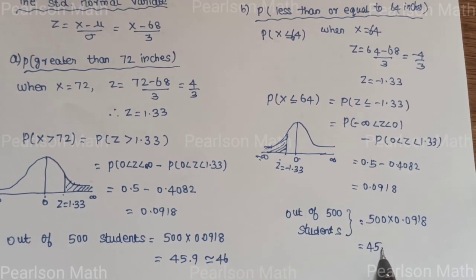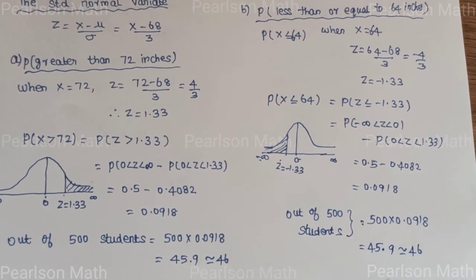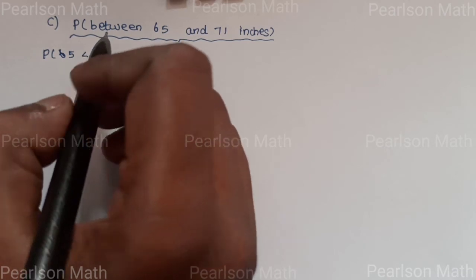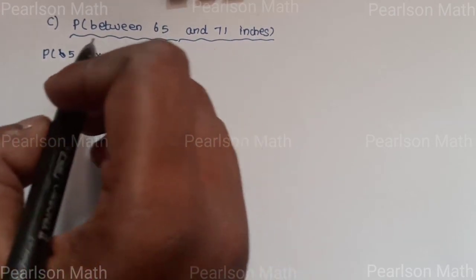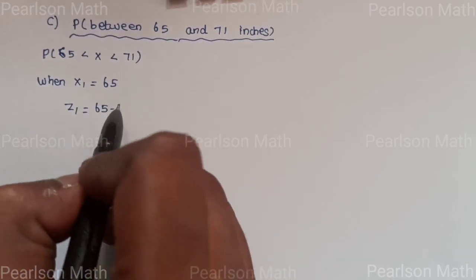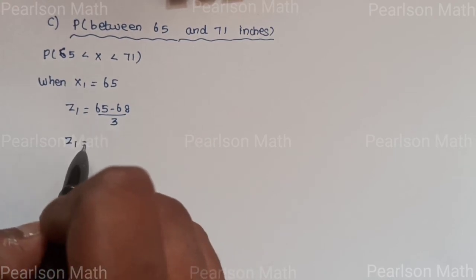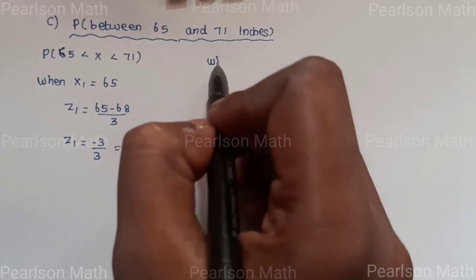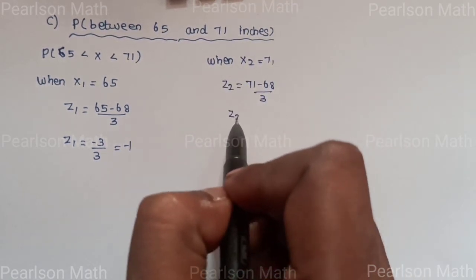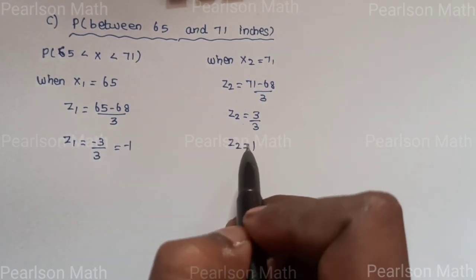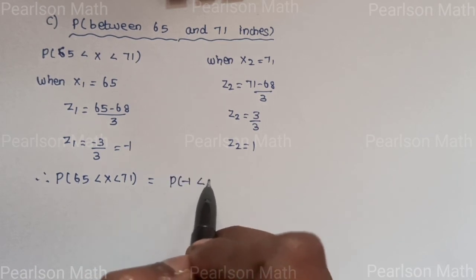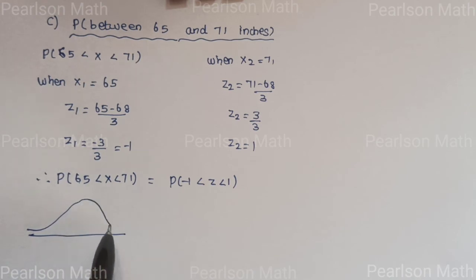Third subdivision: P(65 < X < 71). When X₁ = 65, Z₁ = (65 − 68) / 3 = −3/3 = −1. When X₂ = 71, Z₂ = (71 − 68) / 3 = 3/3 = 1. Therefore P(65 < X < 71) = P(−1 < Z < 1).